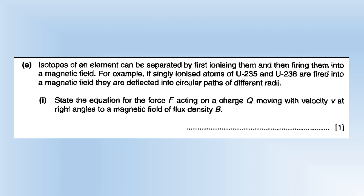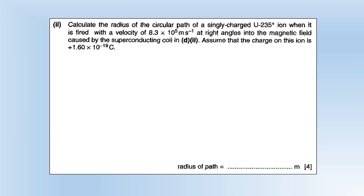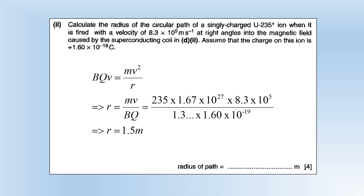Isotopes of the same element can be separated by ionizing them and firing them into a magnetic field. For example, singly ionized U-235 and U-238 — each with charge +1 — are fired in and follow different radii. The force on the charge is F = BQv. Since the velocity is at right angles to the field there is no sine theta term. Setting the magnetic force equal to the centripetal force and rearranging for radius, then plugging in the numbers with a velocity of 8.3 × 10⁵ m/s gives a radius of 1.5 metres.